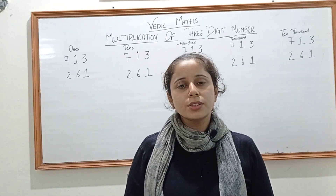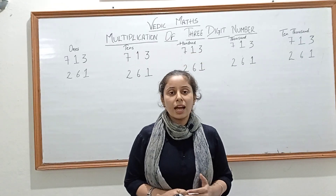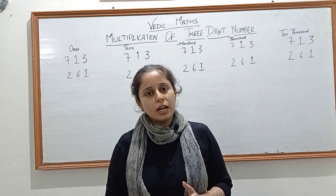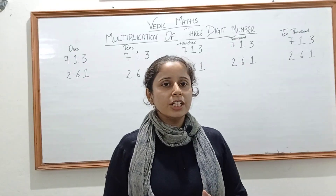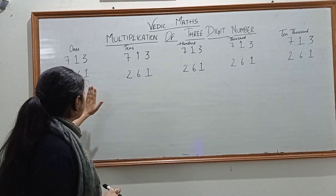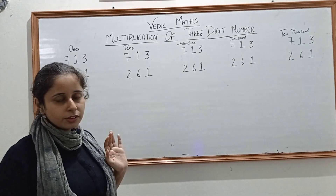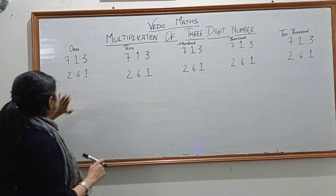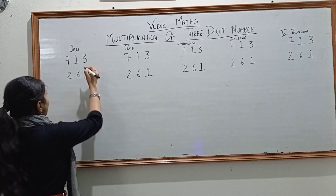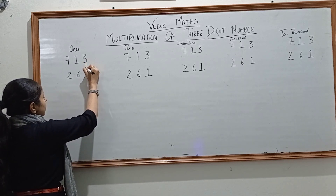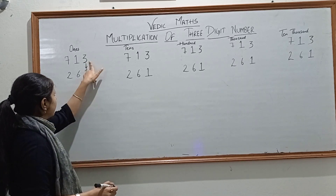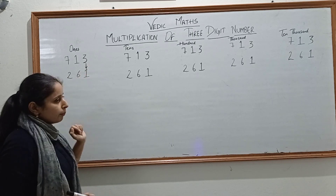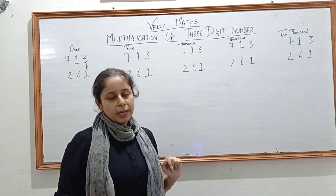Now let's start with the first method, that is multiplication of a 3-digit number. For this we have to follow some pattern. The pattern says the multiplication of the first 2 digits — that is 3 into 1 — will give you the number on the unit place.